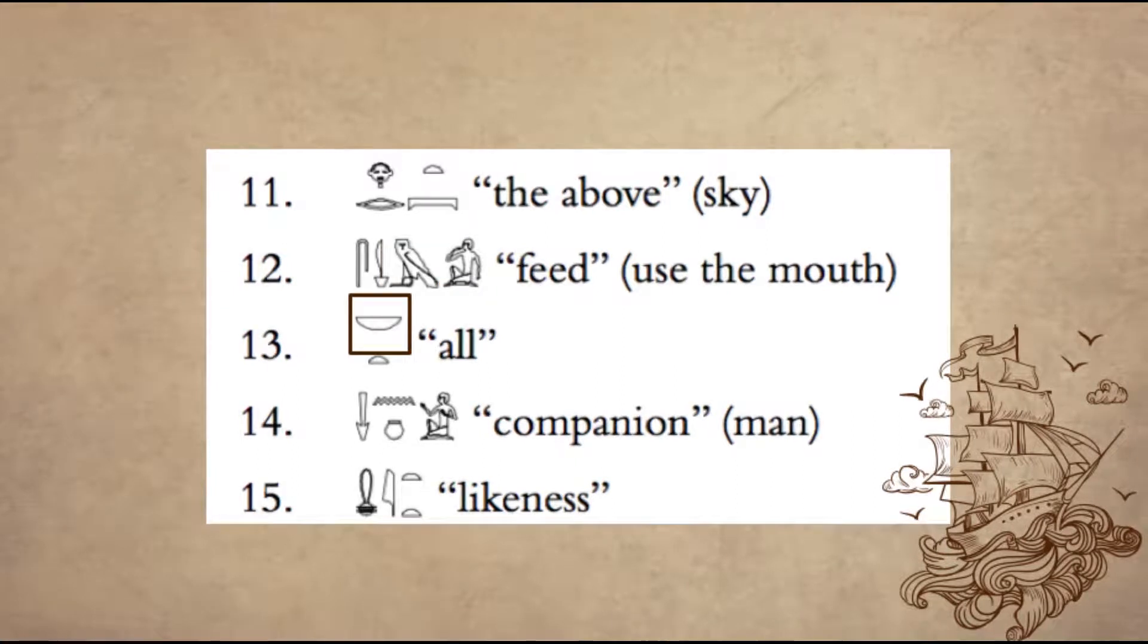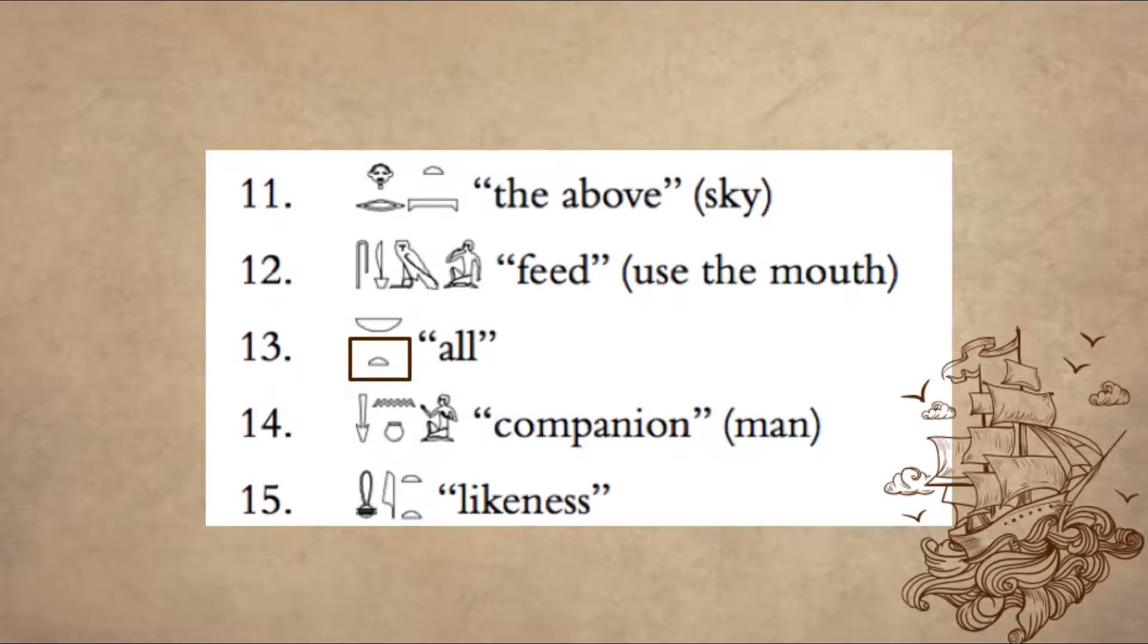Exercise 13, half the circle on top is read neb, half circle down is t, you read it nebet, nebet means all.